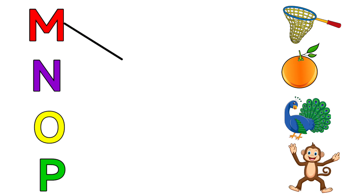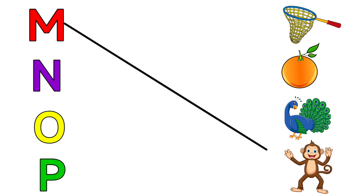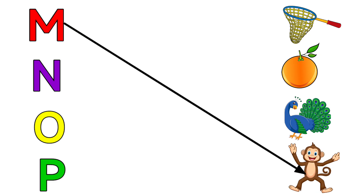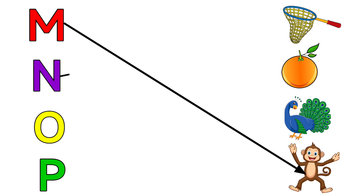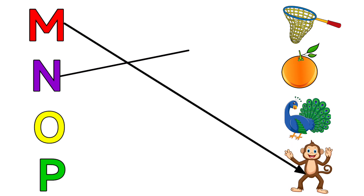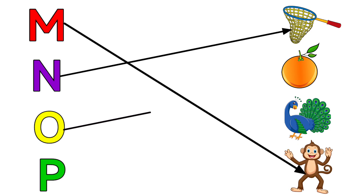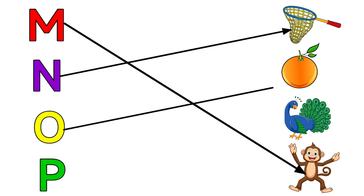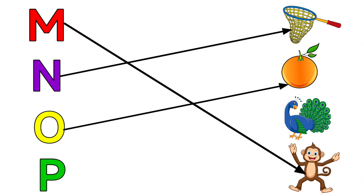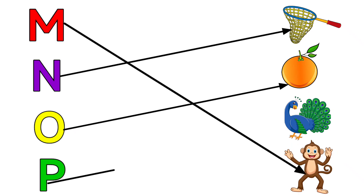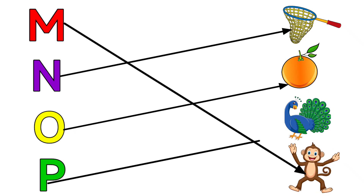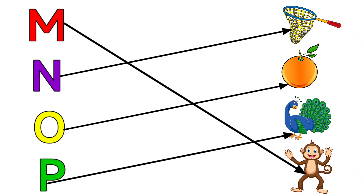M for Monkey, N for Net, O for Orange, P for Peacock.